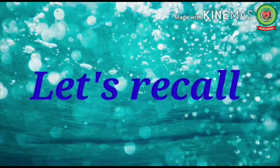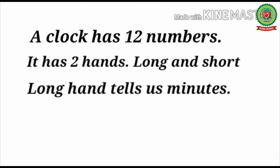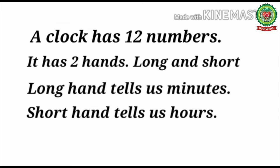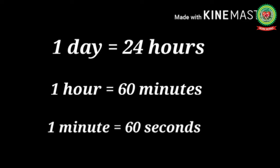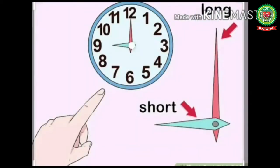Now let's recall what we have done in our previous session. A clock has 12 numbers. It has two hands — long and short. The long hand tells us minutes and the short hand tells us hours. One day has 24 hours, one hour has 60 minutes, one minute has 60 seconds. When the long hand is at 12, we read the time as o'clock. In the given clock the long hand is at 12 and the short hand is at 9, so the time is nine o'clock.